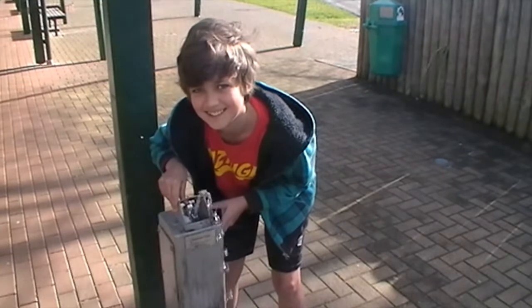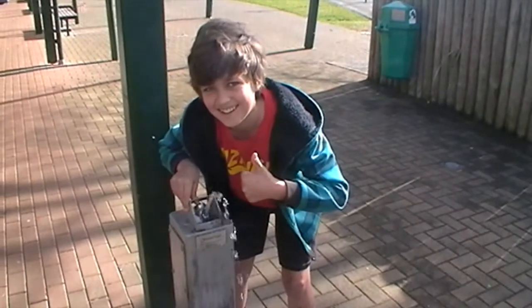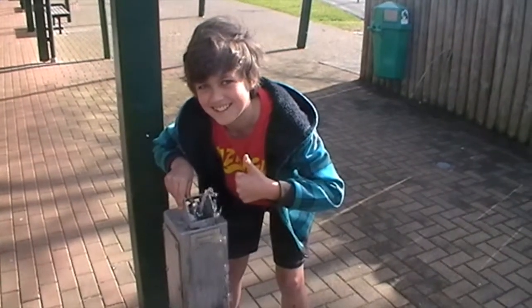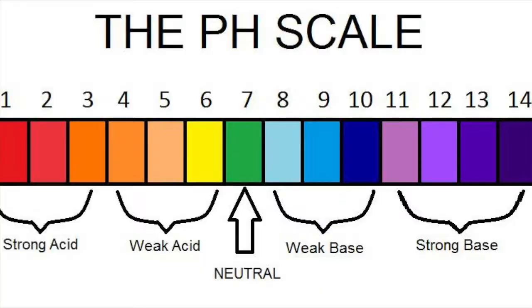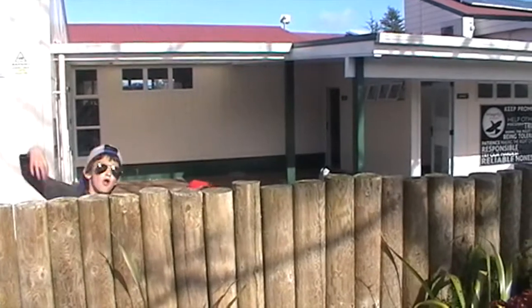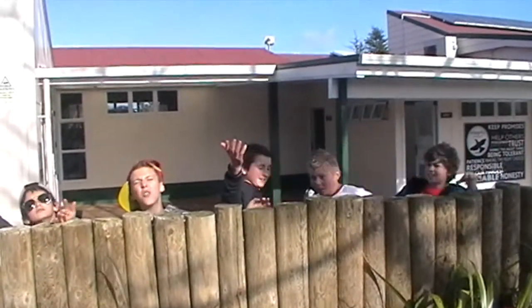The pH of 7 makes it a neutral — water's a neutral. Acids and bases are from two different places on the pH scale.